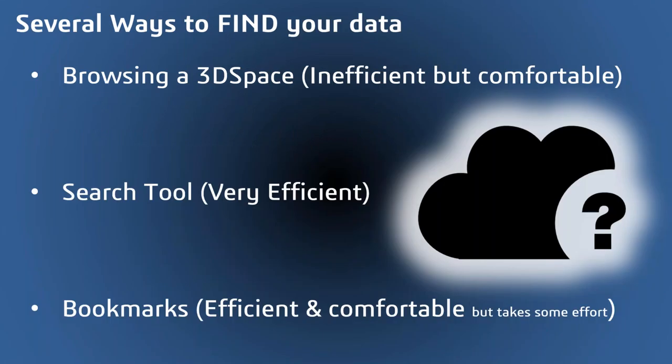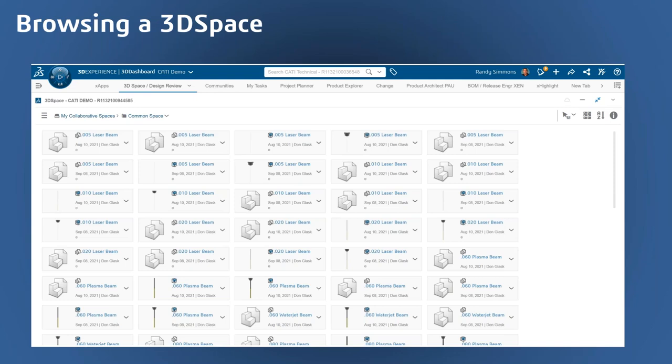There are three main ways you can find your data on the platform. Browsing a 3D space is very inefficient but comfortable for most users. There is a search tool which is super efficient, and then something called bookmarks which is both efficient and comfortable, but does take a little effort to set up. Let's first look at browsing a 3D space — the way most new users try to find data. This feels familiar coming from browsing through Windows Explorer, so a lot of people fall back on it.